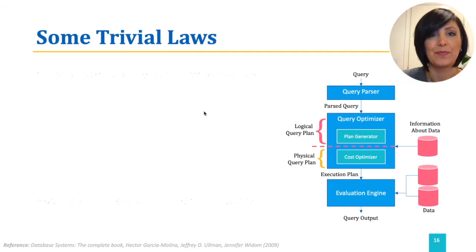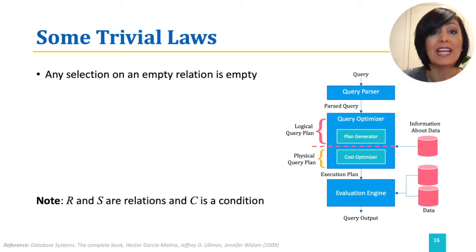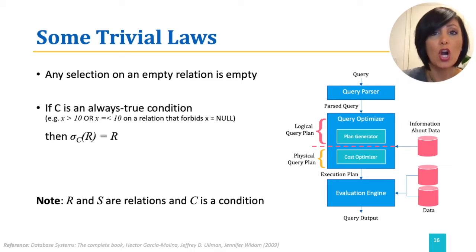For example, any selection on an empty relation is empty. Or, given relation R and S, if a condition C is an always true condition, the selection of tuples with condition C from relation R is the whole relation R, because all tuples will satisfy the select condition.